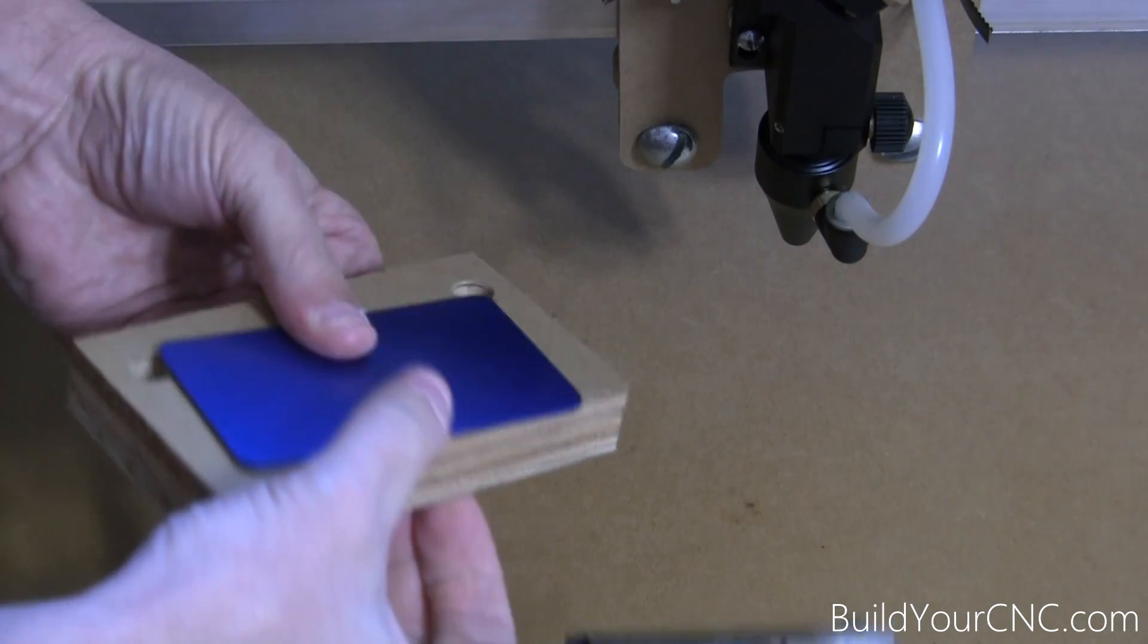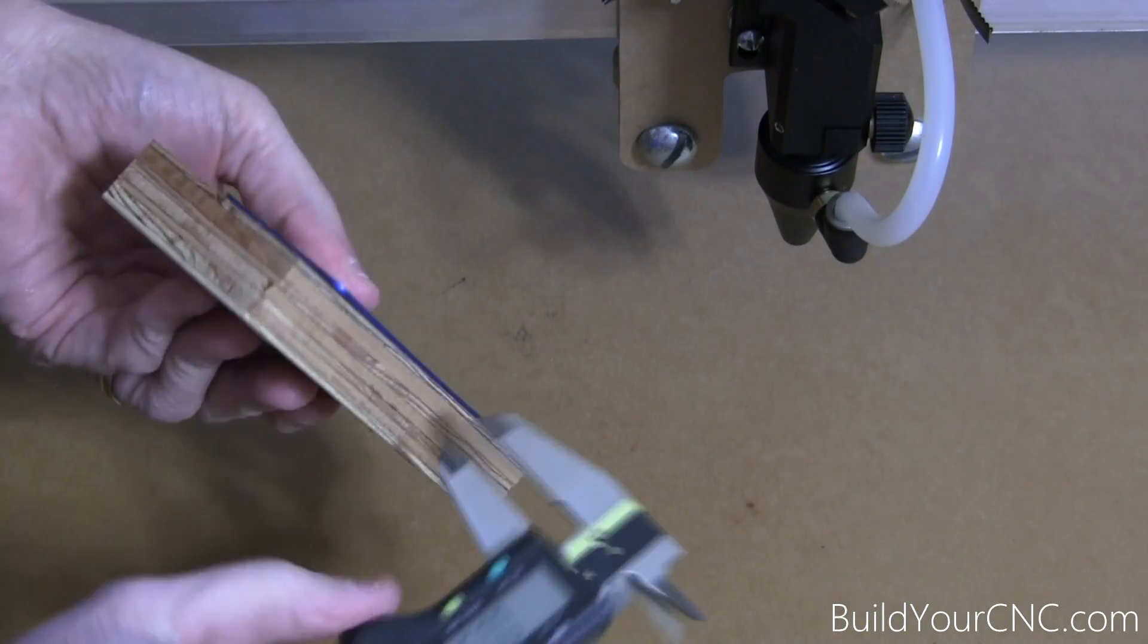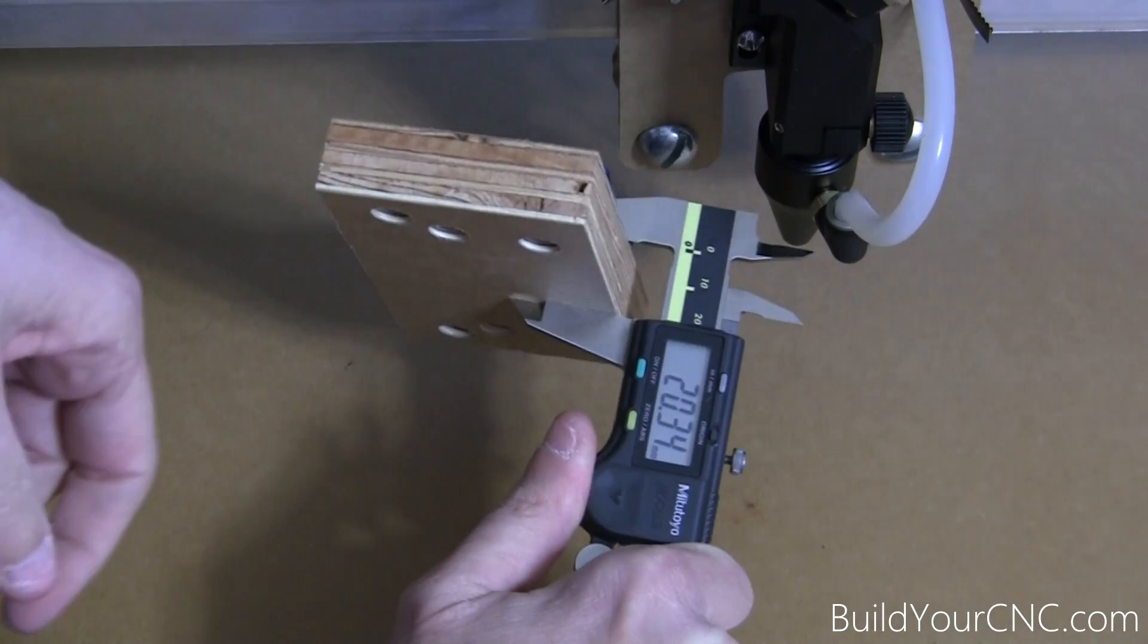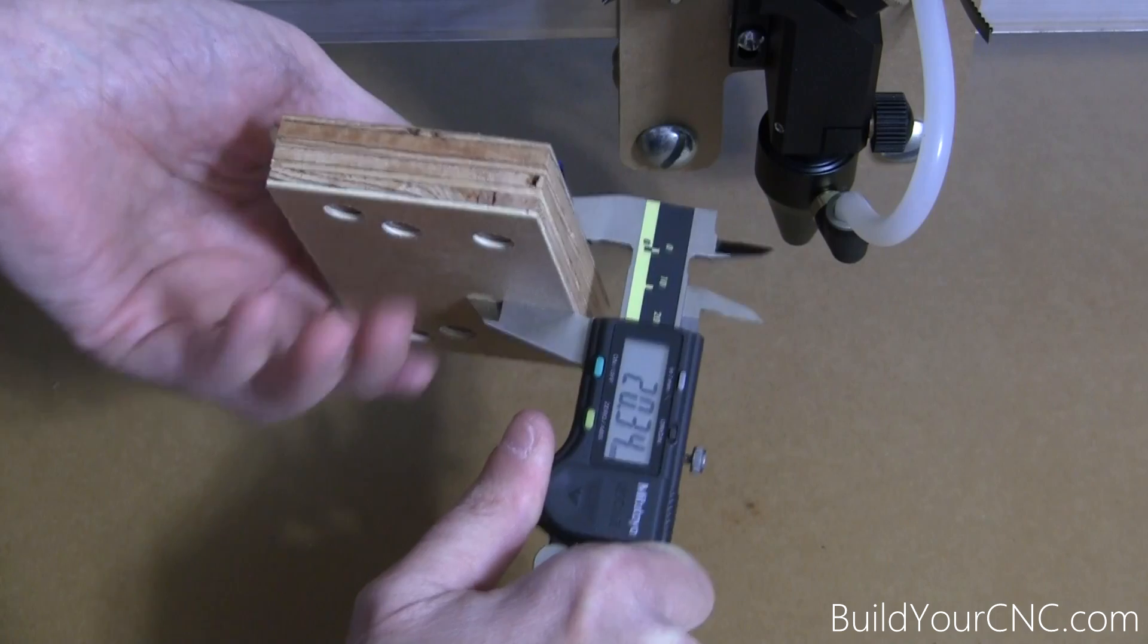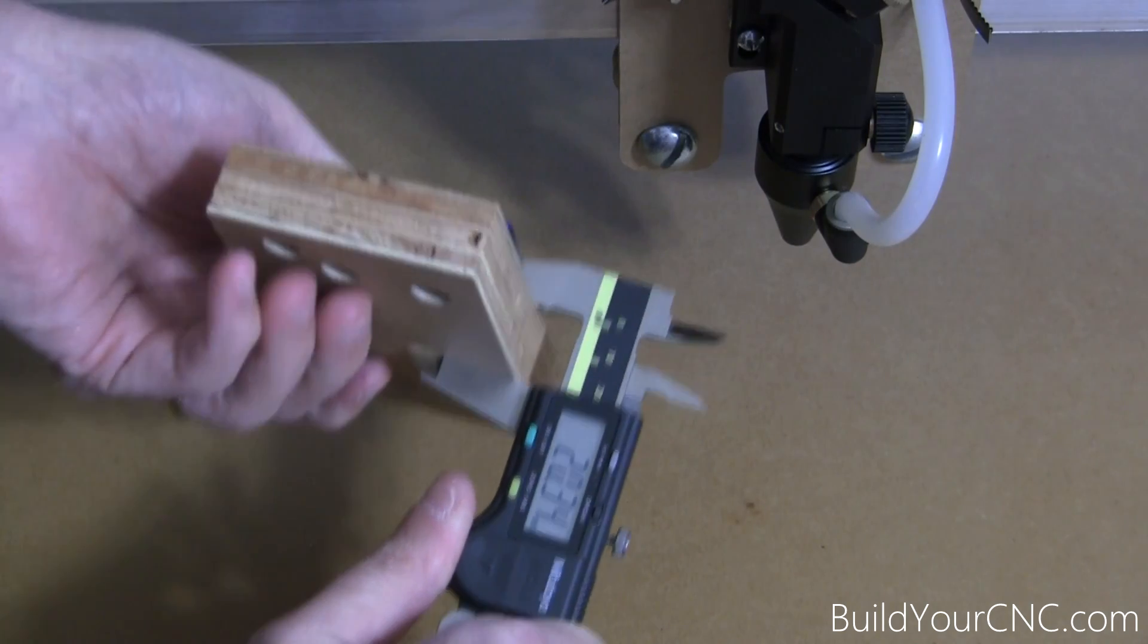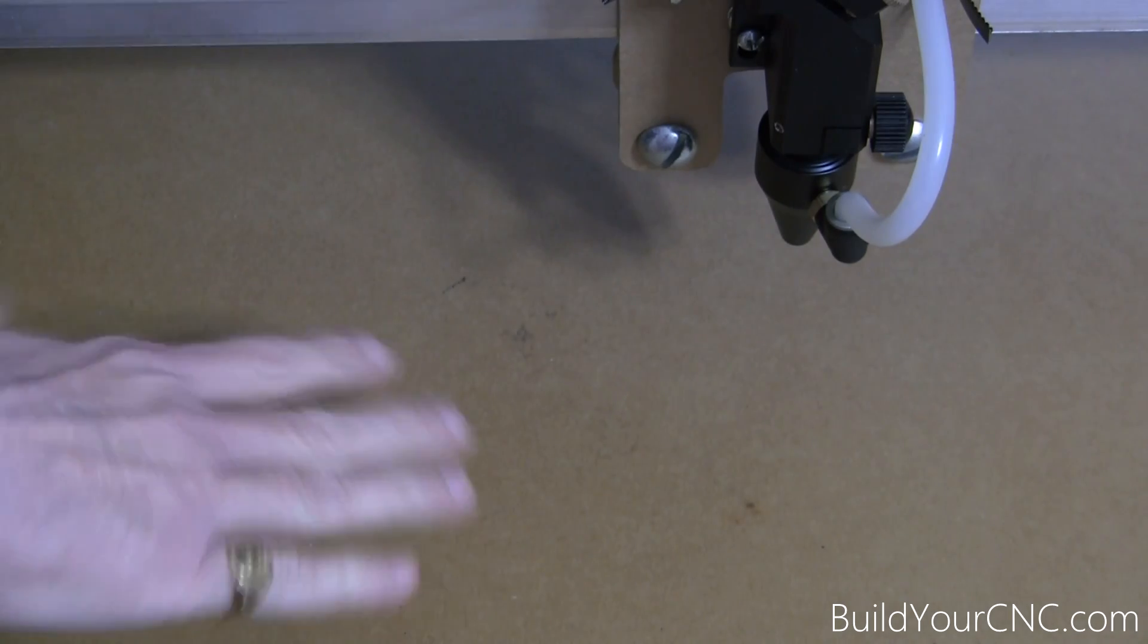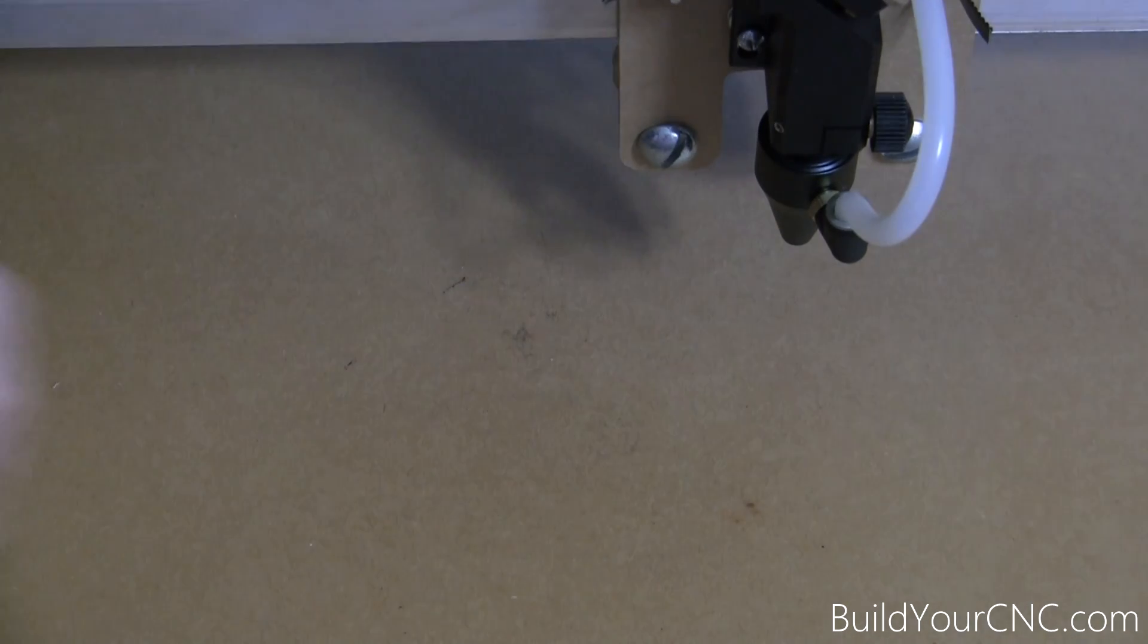This block of wood plus one of these anodized pieces of aluminum happens to be about the same, close to the ideal focus length from the tip of the nozzle. So I'm going to use this as my go, no-go gauge. I'm going to take this and set my sacrificial piece right here on the bottom.